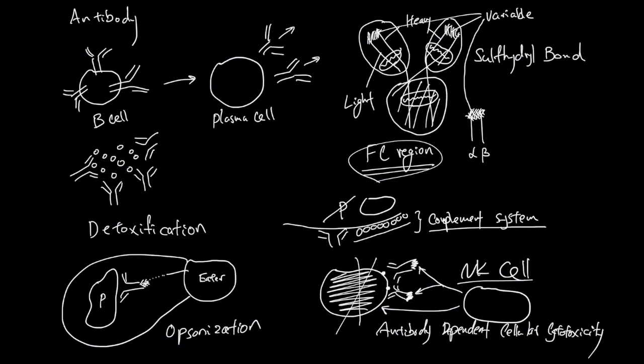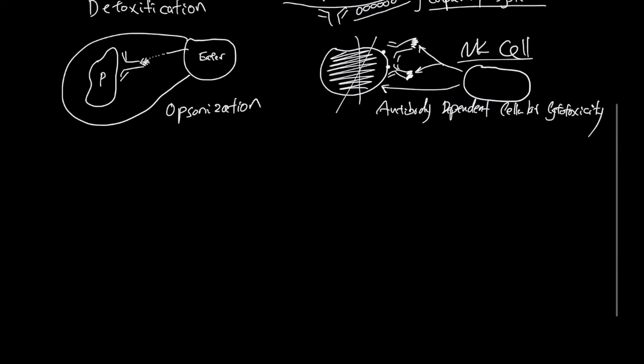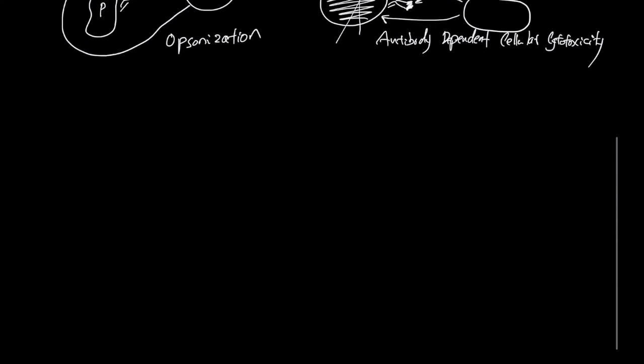There are a few types of antibodies that are different in their FC region. Here is an antibody called IgG. The FC region of IgG can bind to proteins of the complement system.